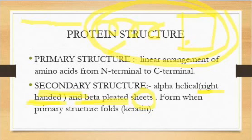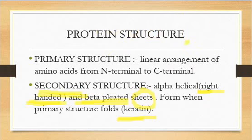For example, keratin — the protein found in our hair and nails — these proteins are generally of secondary level organization. So those proteins are at the secondary level.